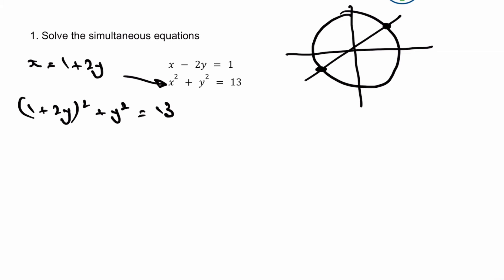Then if I expand the brackets, I get 1 plus 2y multiplied by 1 plus 2y plus y squared equals 13. So let's just do a little bit of playing around with that. And eventually, I'm sure you can do this yourself,